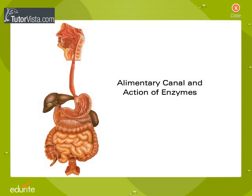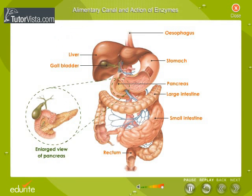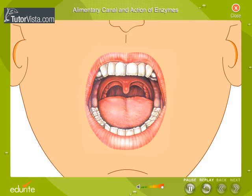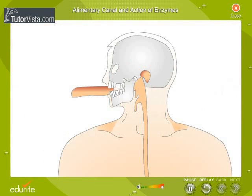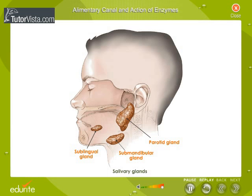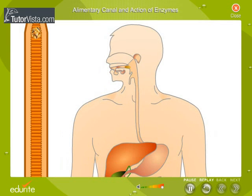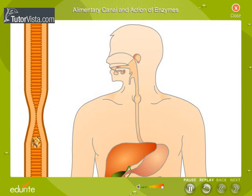Our digestive system consists of the alimentary canal and associated glands. The process of digestion starts in the mouth, where food is chewed with the help of our teeth. The digestive juice saliva mixes with the food; saliva is secreted by the salivary glands. It contains an enzyme ptyalin, which acts on starch and converts it to maltose.